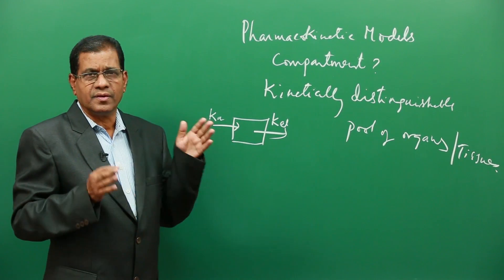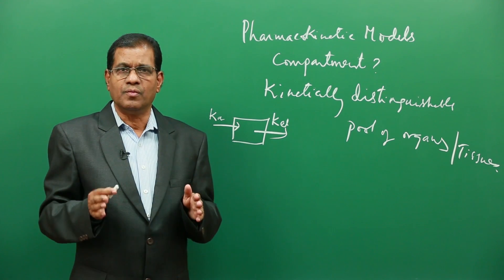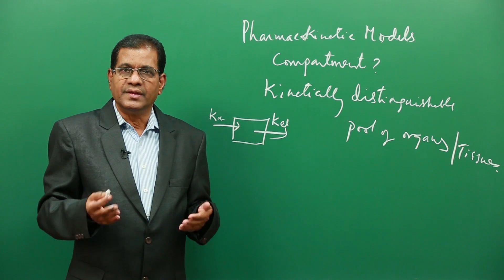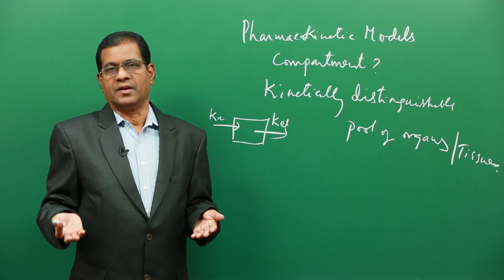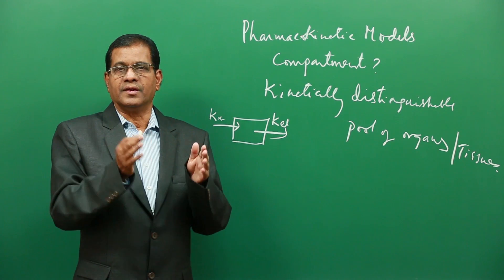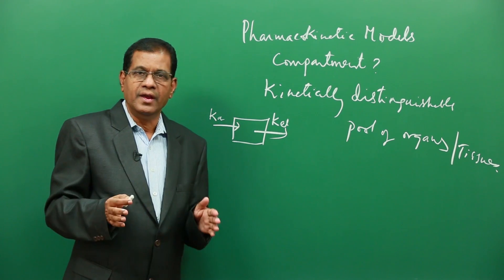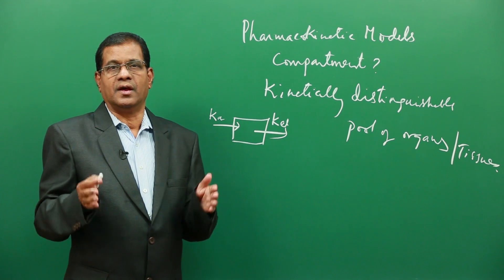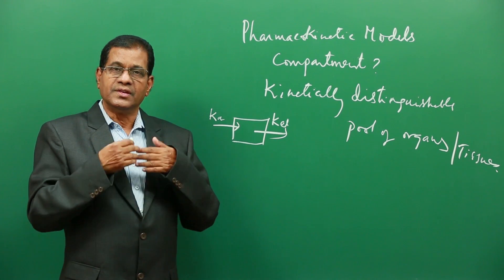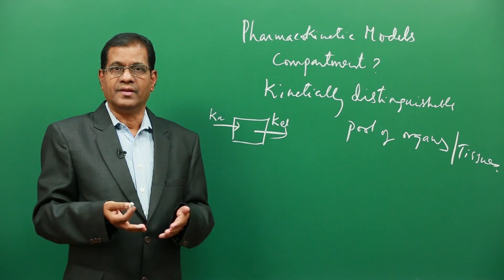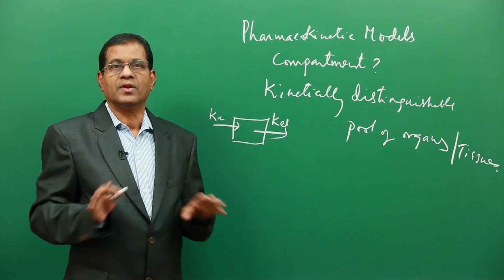The concept of compartmentalization — the division of the body into different compartments — is based on the supply of drug through the blood to various organs and how the drug leaves those organs. Based on these two concepts, certain organs are grouped as one compartment. For example, certain vital organs like the kidney and heart are highly perfused with blood vessels, and hence the drug enters these organs almost instantaneously as it enters the general circulation. Therefore, the general circulation along with vital organs like the heart and kidney are grouped as one compartment.